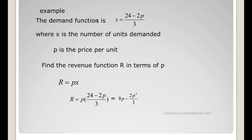Next example: the demand function is x equals 24 minus 2p/3 where x is the number of units demanded, p is the price per unit. Find the revenue function R in terms of p. Now revenue function is px, that is p into (24 minus 2p/3), so I get 8p minus 2p squared/3.